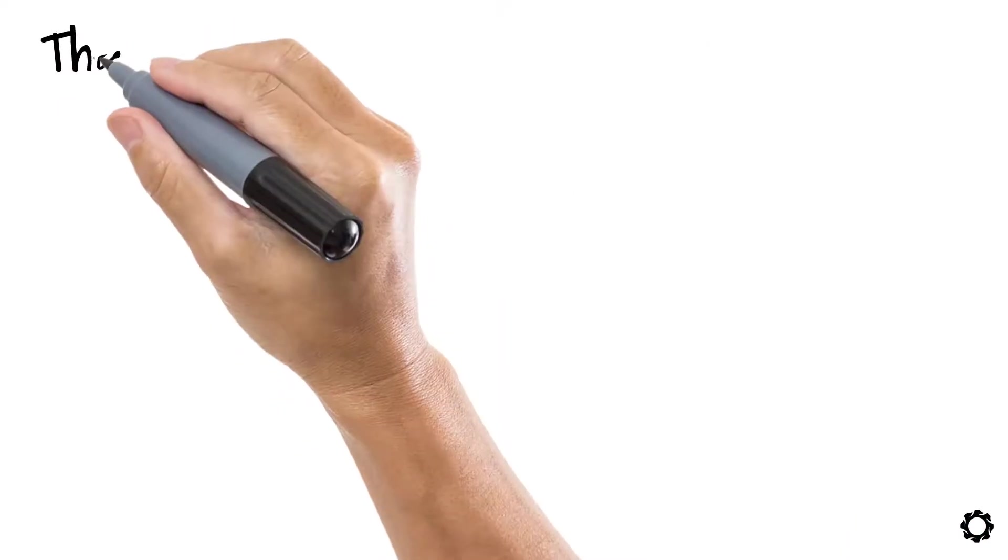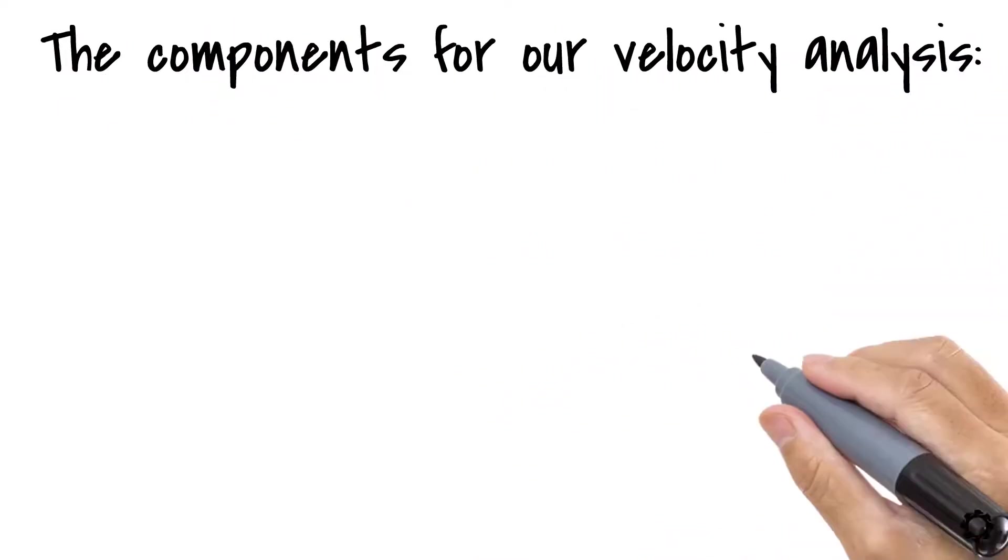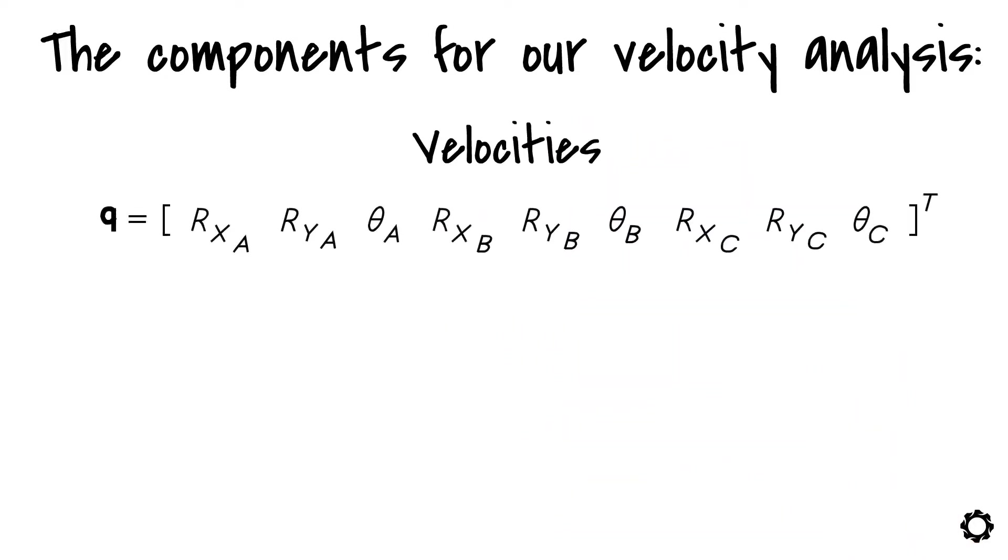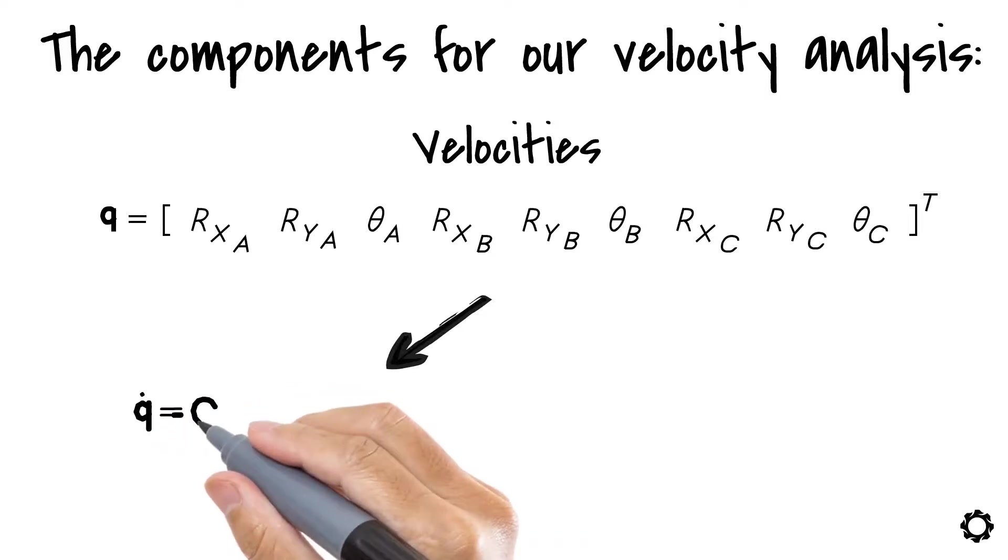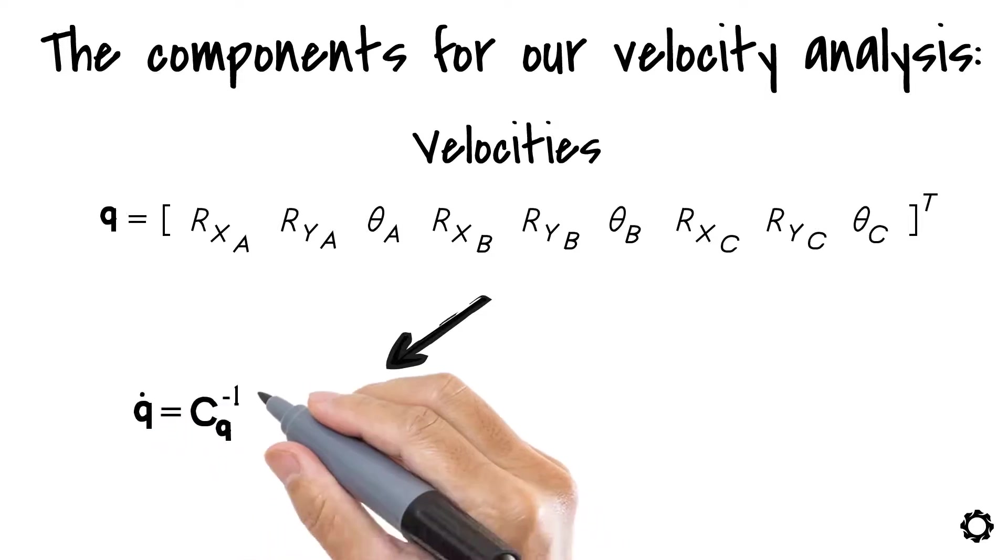Let's now see the components of our velocity analysis. The velocities of the generalized coordinates are calculated according to the following equation: q dot equals cq inverse times minus ct.